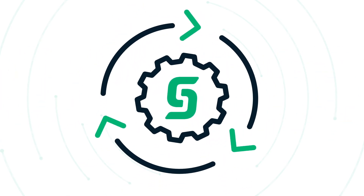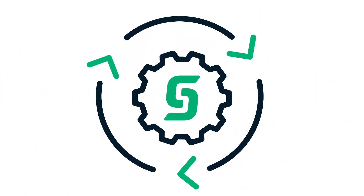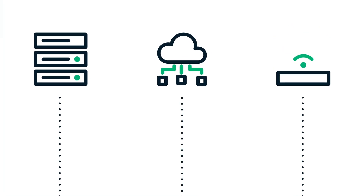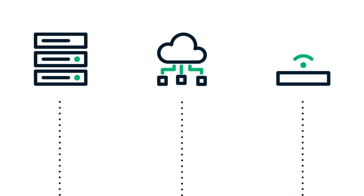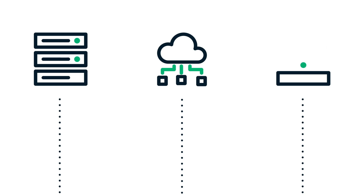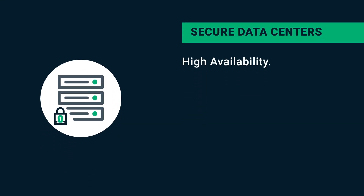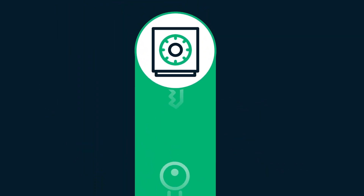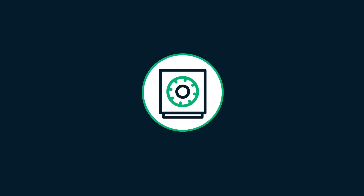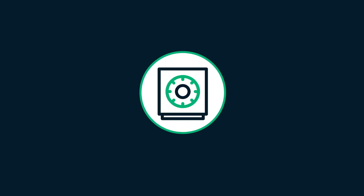Sectigo utilizes industry standard protocols for automated certificate enrollment and renewal, allowing organizations to take advantage of a wide variety of open source and third-party applications, often without the need to install client-side software. Additional key features include a secure data center, which eliminates operation costs required by regulated industries, and key vaulting, which securely stores keys in case of accidental destruction or loss.